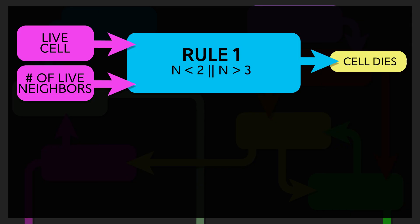First, for a live cell, look at all eight neighbors. If there are fewer than two live neighbors or greater than three live neighbors, the cell dies.